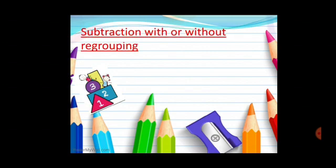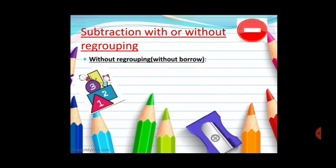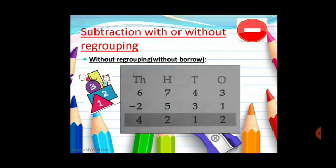Now subtraction with or without regrouping. Without regrouping means without borrow. Look at the numbers 6743 and the subtrahend is 2531. The digits of minuend are more than the digits of subtrahend, so there is no need of taking borrow. The answer is 4212. Remember students, always start subtracting the numbers from one's place.